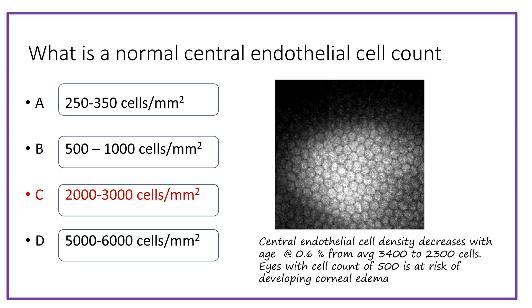The answer is 2000 to 3000 cells. The central endothelial cell density at the age of 8 is around 3500 and it gradually declines at the rate of 0.6% per year, reaching around 2300 at the age of 85. So the answer is 2000 to 3000 cells on average, and when the cells decrease to around 500 cells per millimeter square, the eye is at risk of developing corneal edema.